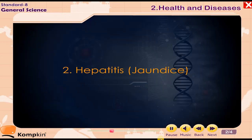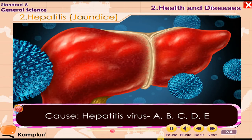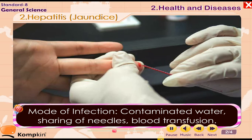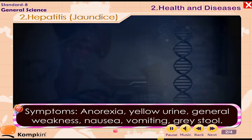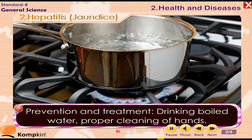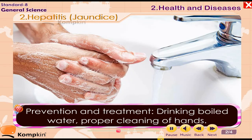2. Hepatitis (Jaundice). Cause: Hepatitis virus A, B, C, D, E. Mode of infection: Contaminated water, sharing of needles, blood transfusion. Symptoms: Anorexia, yellow urine, general weakness, nausea, vomiting, grey stool. Prevention and treatment: Drinking boiled water, proper cleaning of hands.